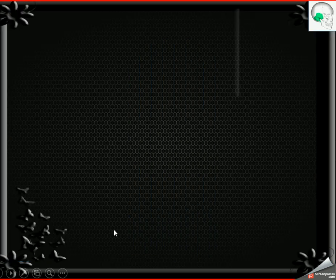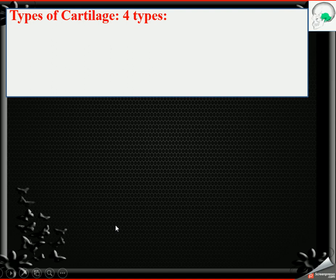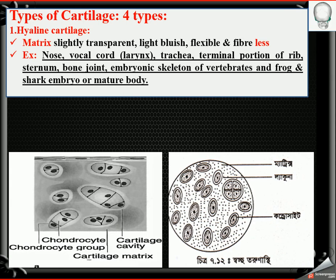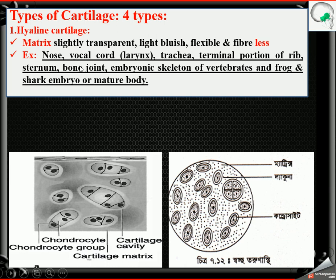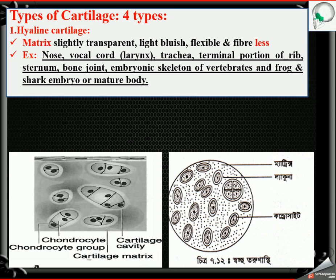Now the types of cartilage. There are four types. First is hyaline cartilage. The matrix of hyaline cartilage is slightly transparent, light bluish, flexible, and fiberless — there is no fiber. Examples of hyaline cartilage include the nose, vocal cord, larynx, trachea, terminal portions of ribs, sternum bone joints, and the embryonic skeleton of vertebrates.